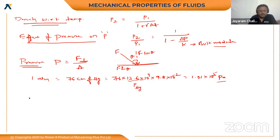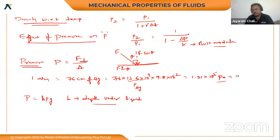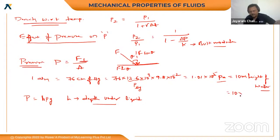Pressure changes with respect to depth h as: pressure equals h into rho into g, where h is the depth under a liquid or water. Atmospheric pressure can also be written as 10 meters height of water, that is 10 into rho into g.